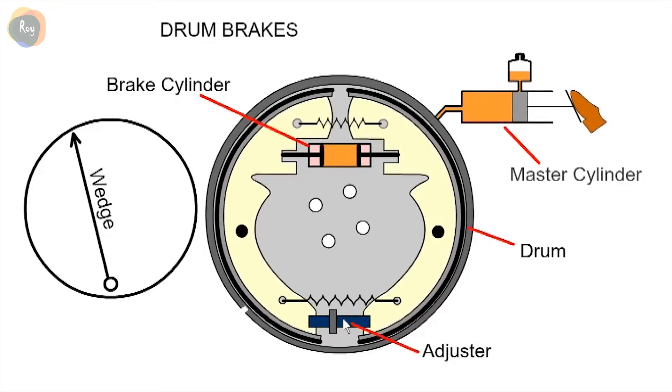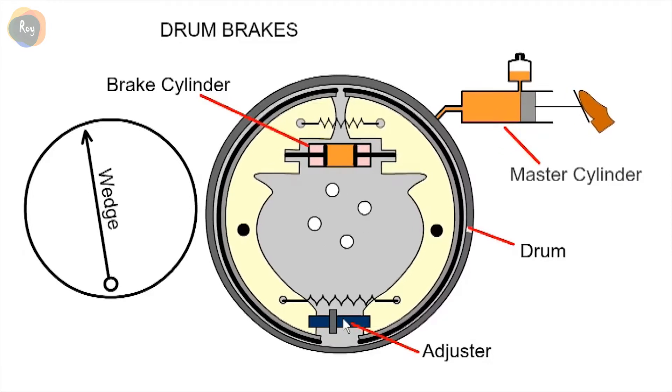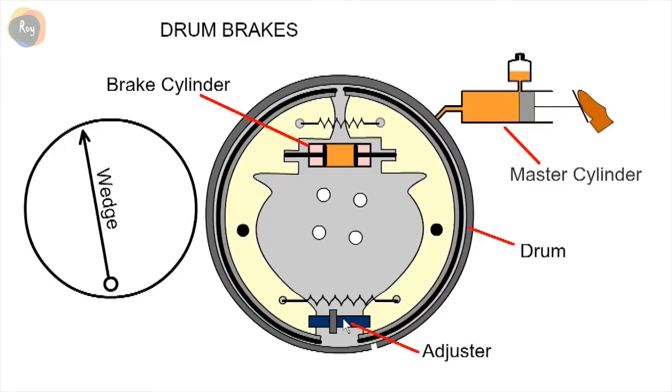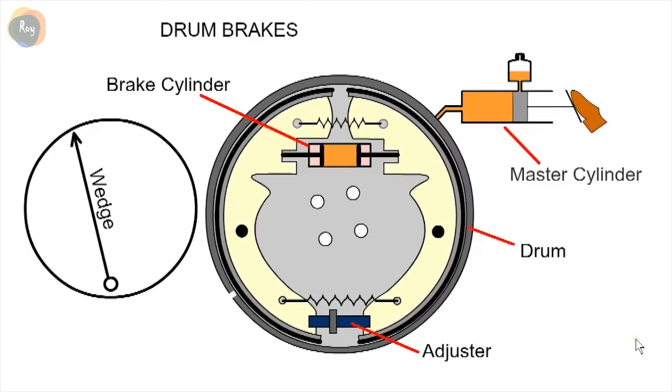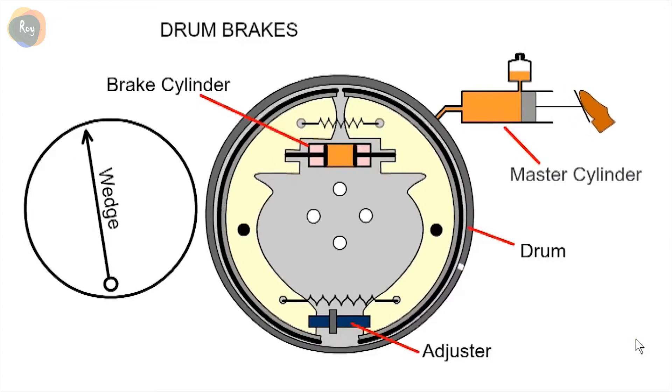The hand brake or emergency brake is independent of the hydraulic system and usually cable operated. Drum brakes are more difficult to inspect, service and cool. Under heavy braking, the brakes will heat and become less effective. This is called brake fade.